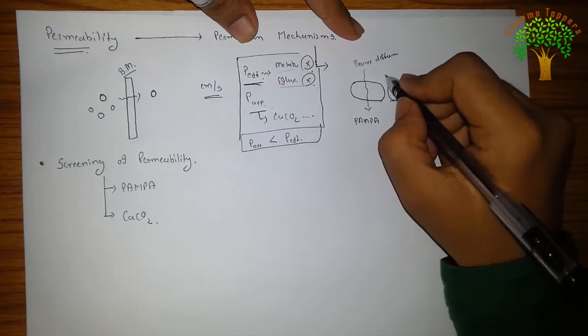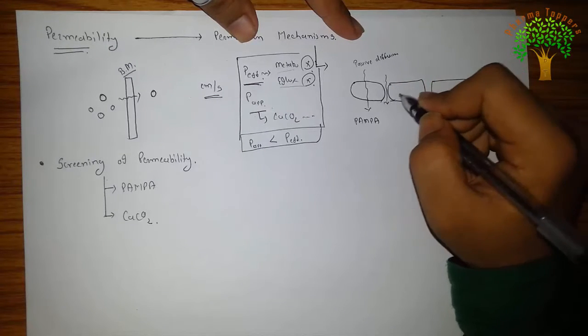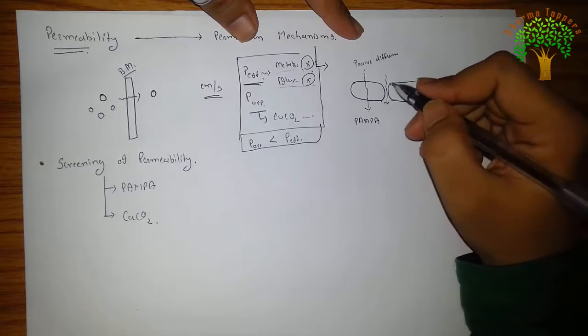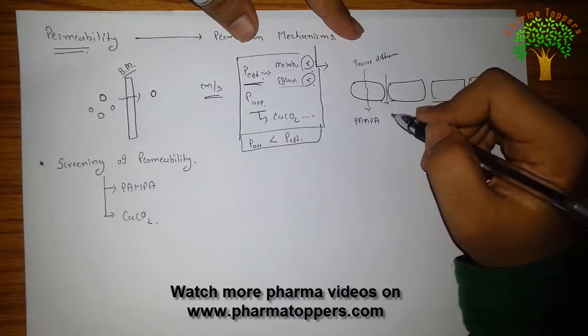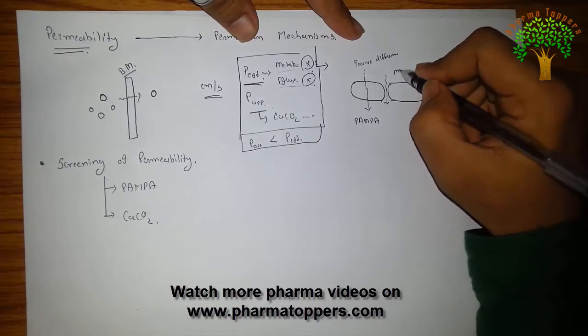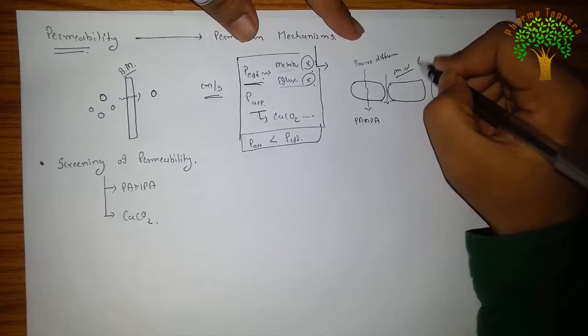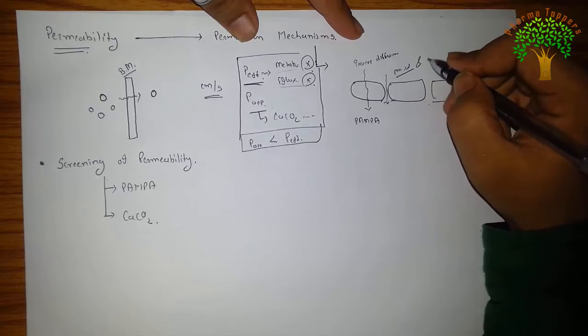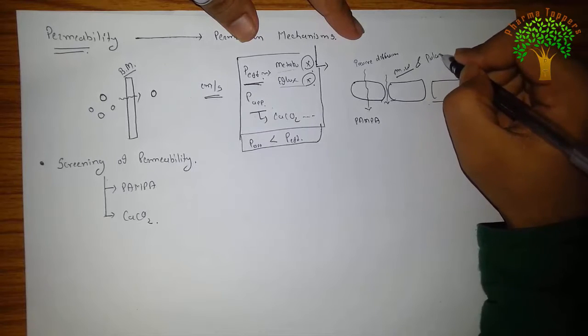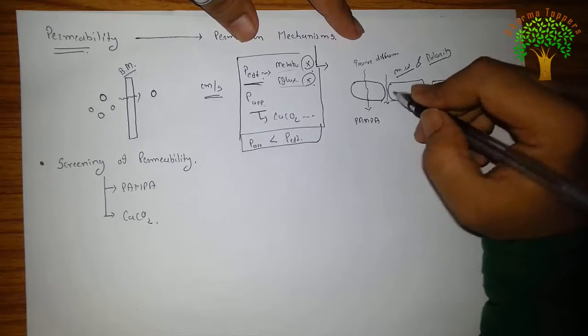Suppose my molecule passes through here, which is the paracellular transport. This paracellular transport mainly depends on the molecular weight of the compound, the size, polarity of the compound, because they are the aqueous pores.